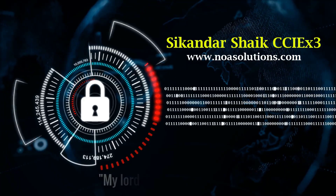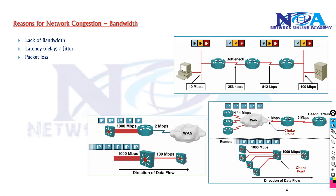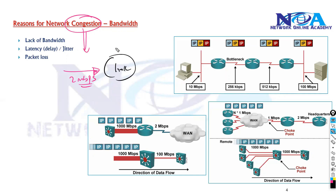Bismillahirrahmanirrahim. Before we go ahead with the implementation of quality of service, we will try to understand the reasons for network congestion. Congestion occurs when you are trying to send 2 Mbps of traffic whereas your link interface supports less than that — let's say only 1.5 Mbps. This will lead to congestion and packets being dropped.